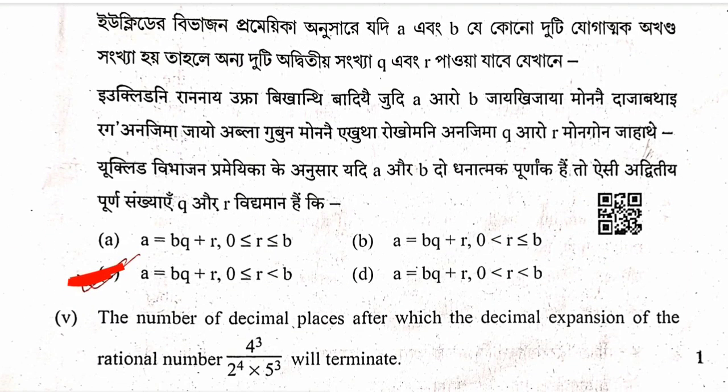Fourth question regarding the division algorithm: option is a equals bq plus r, where r is less than b. Option C is correct.